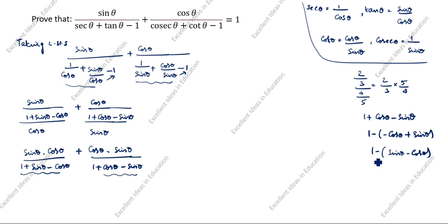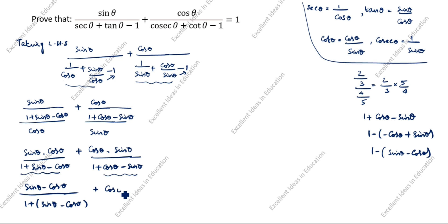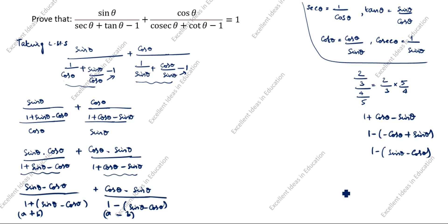Now we have sinθcosθ divided by (1 + sinθ − cosθ) plus cosθsinθ divided by (1 − (sinθ − cosθ)). We recognize this as the form (a + b) and (a − b) in the denominators. Using the identity (a + b)(a − b) = a² − b², where a = 1 and b = (sinθ − cosθ).